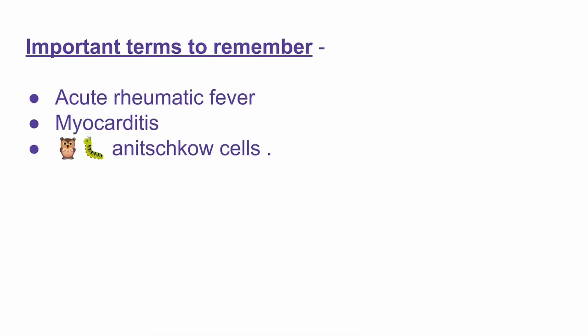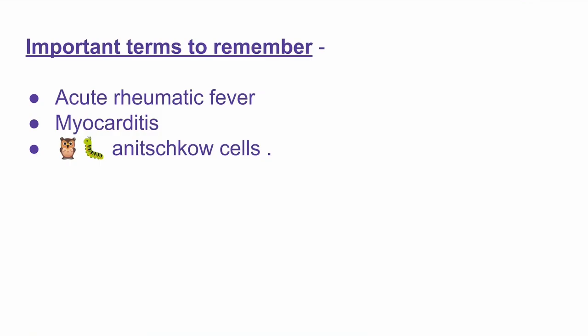Anitschkow cells are the important content of Aschoff nodules. The key things to remember: owl refers to the binucleated appearance, caterpillar refers to the chromatin condensation, and macrophages with abundant cytoplasm are also present. Thank you.